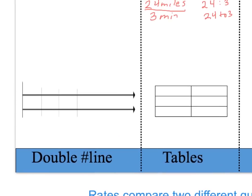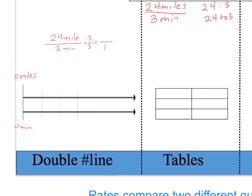If I zoom in into the double number line, I know that miles or distance would go on the top, so I'm going to start with zero miles. And time — zero minutes — will go on the bottom. I want to figure out what my unit rate is. So if I have 24 miles over three minutes, I can divide the top and bottom by three because I want to get one on the bottom and eight on the top. So my unit rate would be eight miles per one minute.